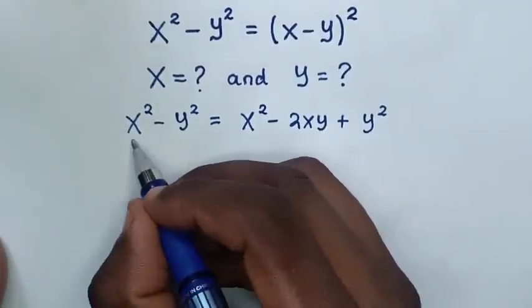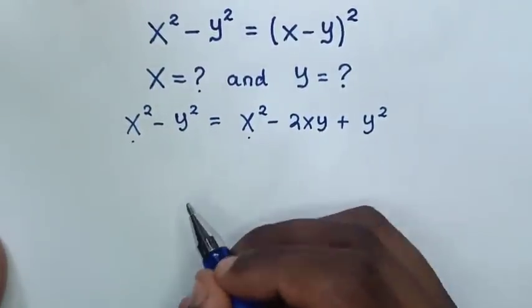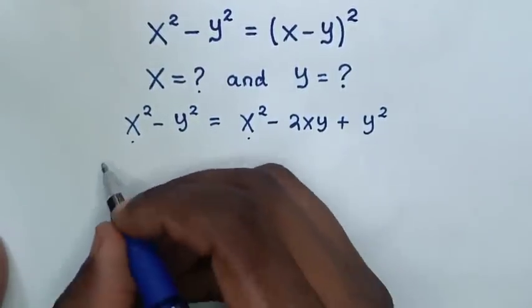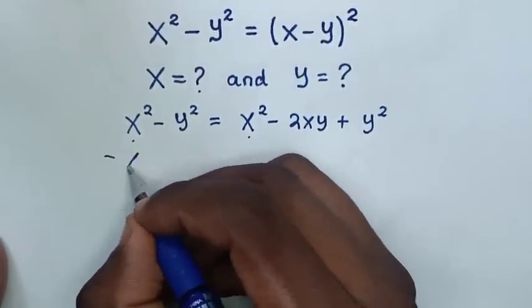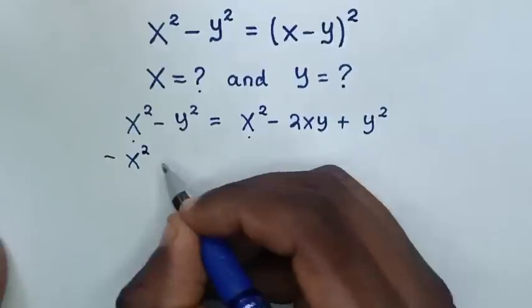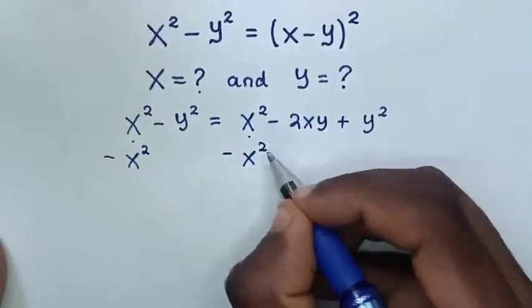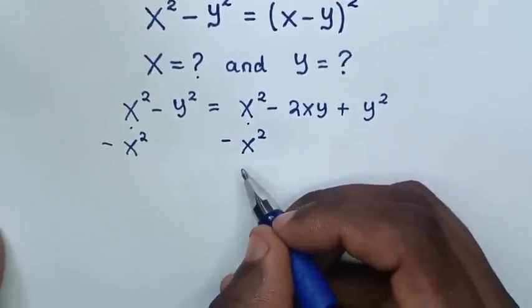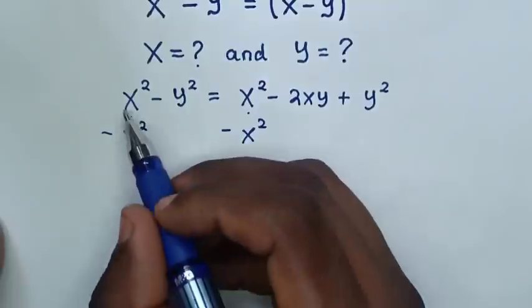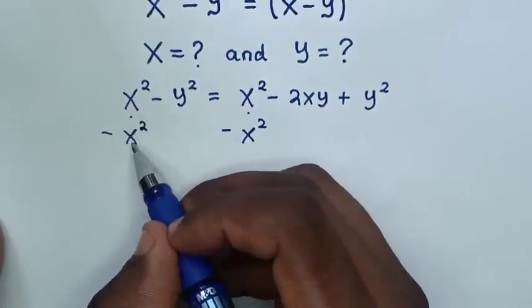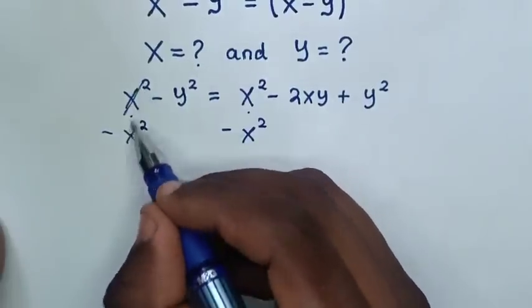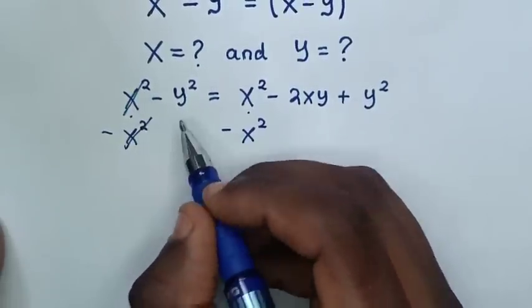In this equation, x squared is common, so we will subtract x squared from both sides. Then x squared minus x squared will cancel each other.